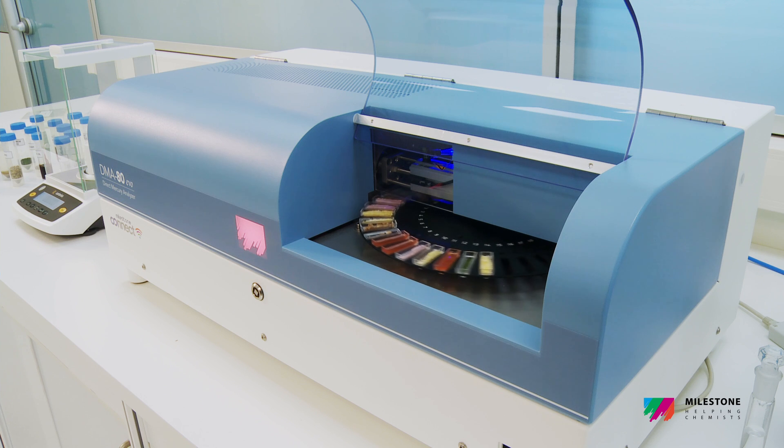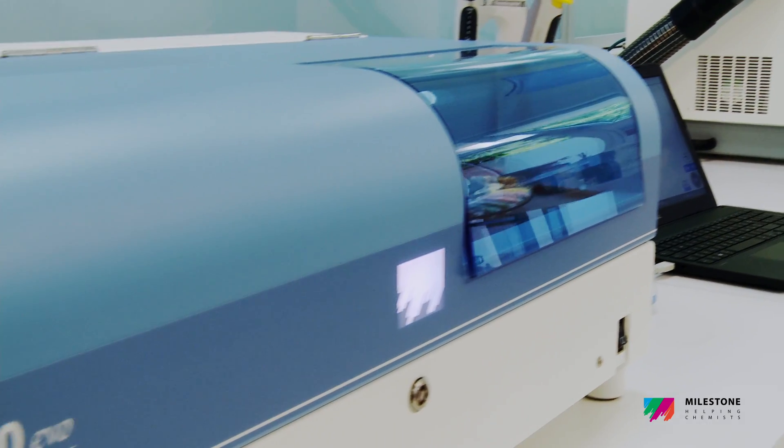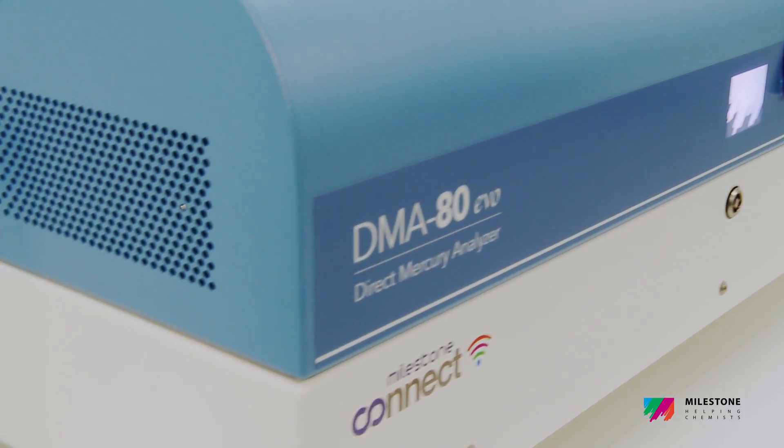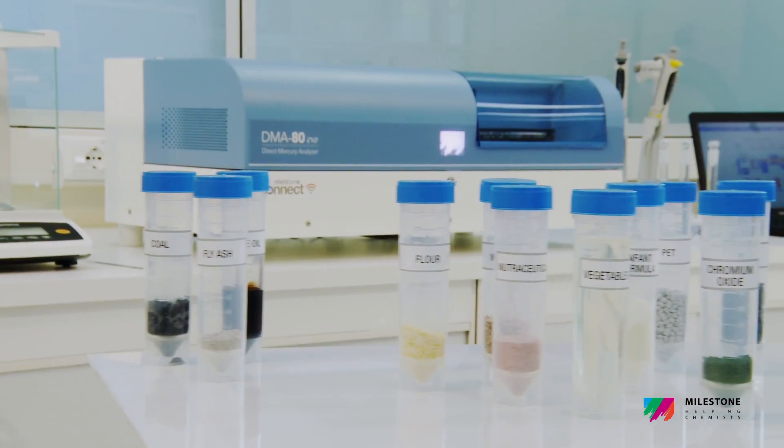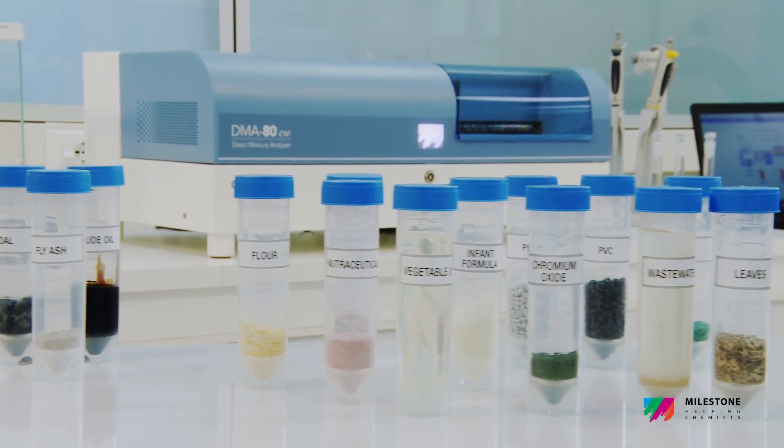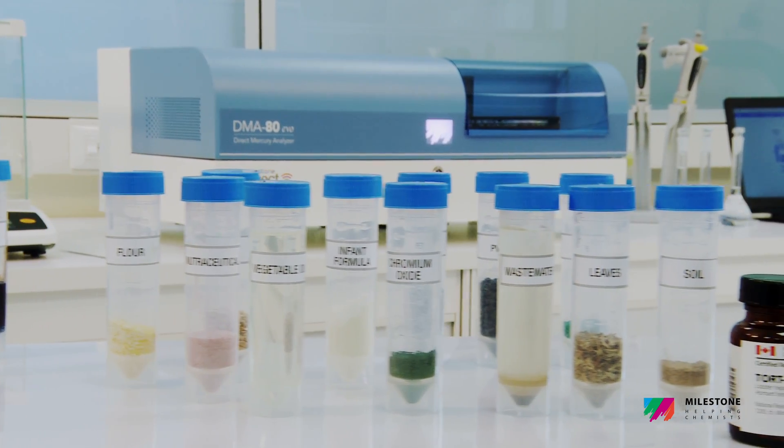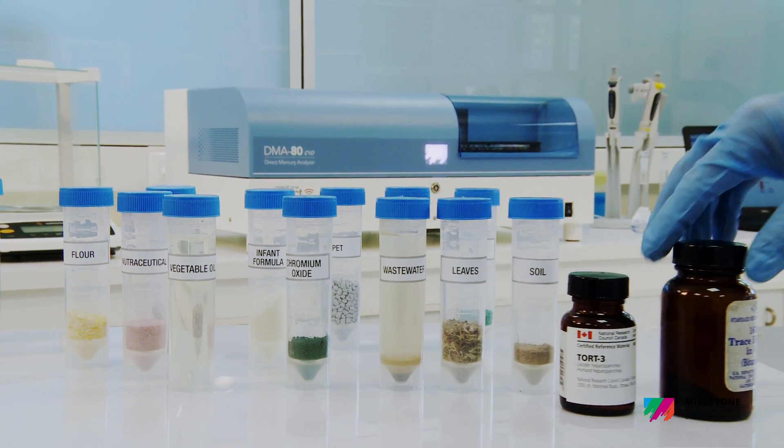Since the DMA80 EVO is used for mercury determination, it has seamlessly integrated into a wide range of applications and industries, such as environmental, energy, petroleum, food, cement, cosmetics, agriculture and mining, among others.